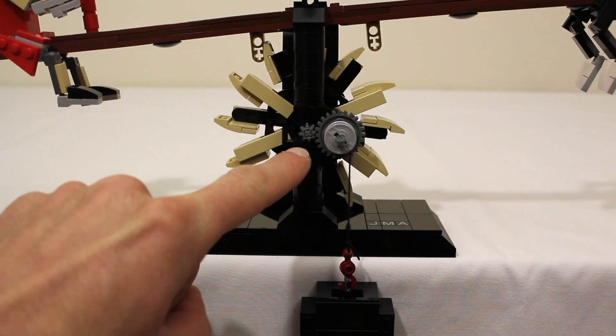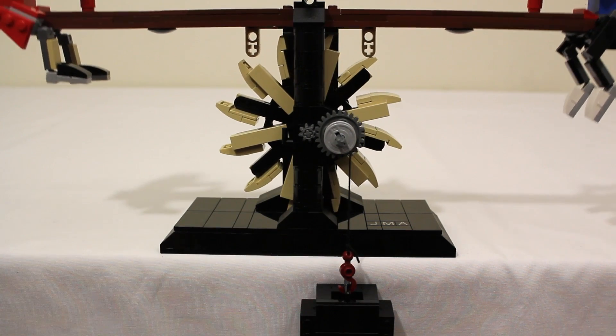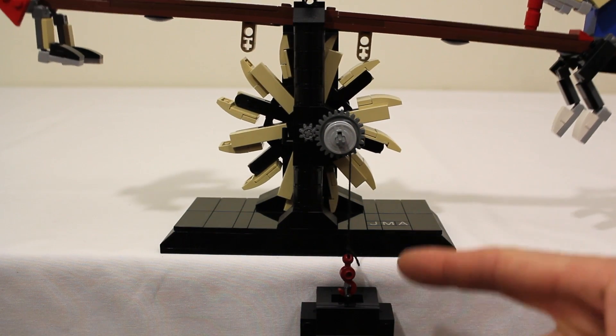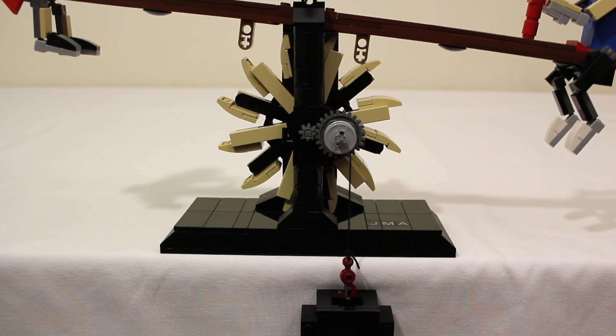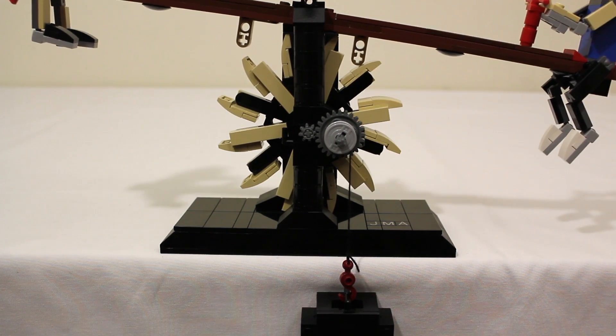The other thing I've done with this model is I've added this 3 to 1 gear reduction between the escapement gear and the spool holding the weight. In that way, the weight will actually travel a third of the distance as it normally would if it was attached directly to the escapement gear, and we get three times the runtime.